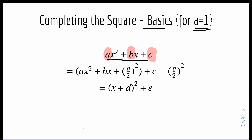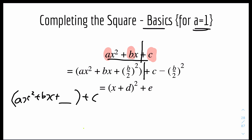So how you would do completing the square when a equals 1: step 1, you would separate the c coefficient. We have the left-hand side: ax² + bx, and you just separate it, plus c. We need to find a new c coefficient inside the bracket. You take the b coefficient and divide it by 2, then square it. So the new c coefficient would be (b ÷ 2)².